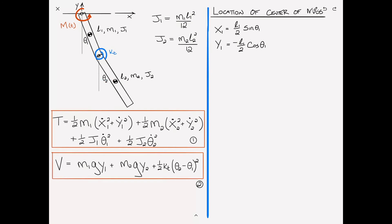We first locate the hinge. x2 is equal to l1 sine of theta 1 plus l2 over 2 sine of theta 2. Similarly, for the y location, y2 is equal to minus l1 cosine theta 1 minus l2 over 2 cosine of theta 2.